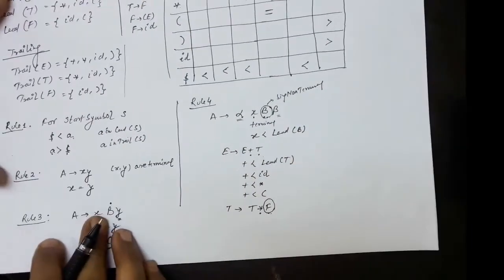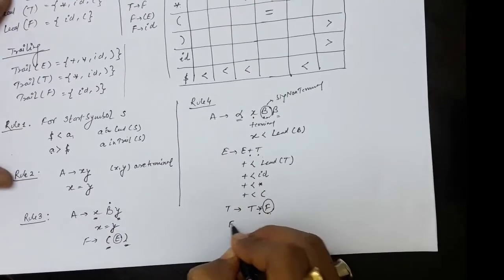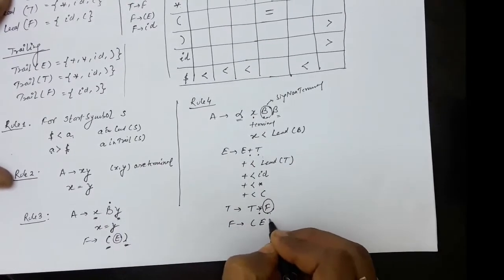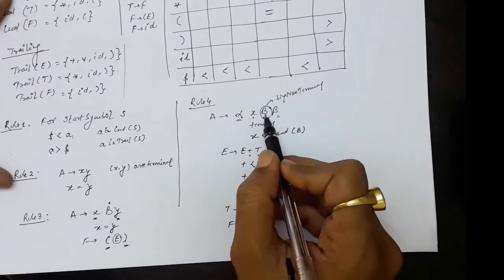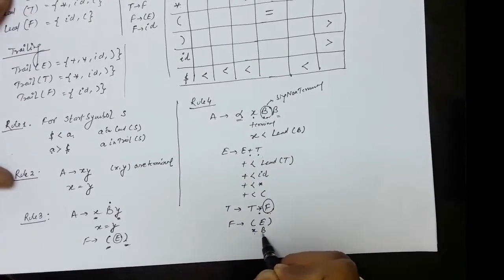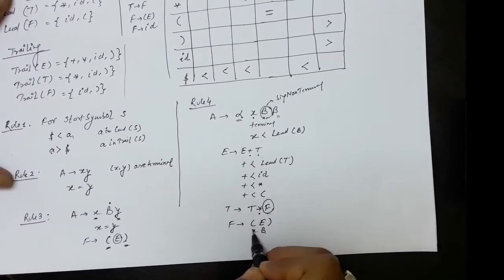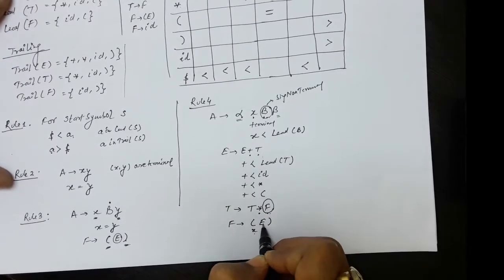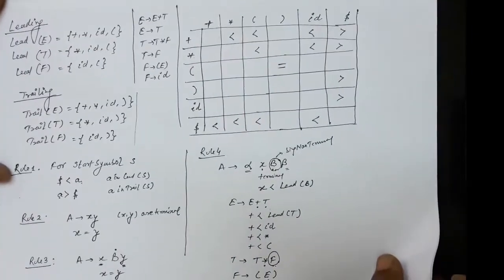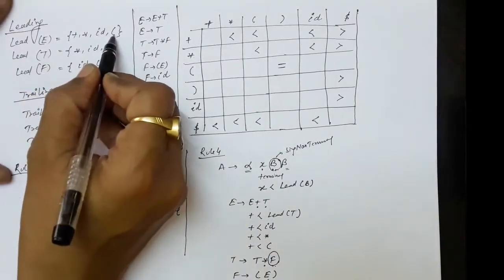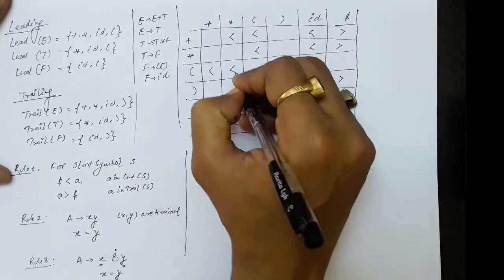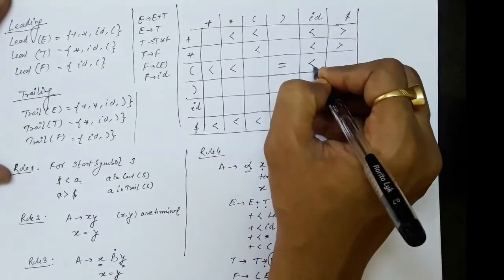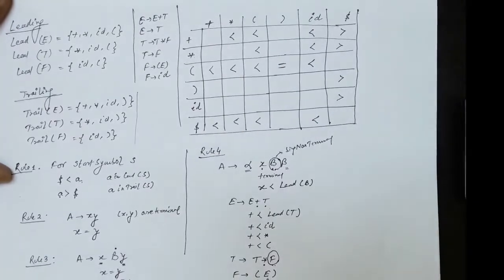We have another production on which rule four can be applied: F → (E). Here opening parenthesis is X and E is B, so opening parenthesis is less than all symbols in the leading of E. The leading of E contains plus, multiplication, id, and opening parenthesis. So opening parenthesis < plus, opening parenthesis < multiplication, opening parenthesis < id, and opening parenthesis < opening parenthesis.